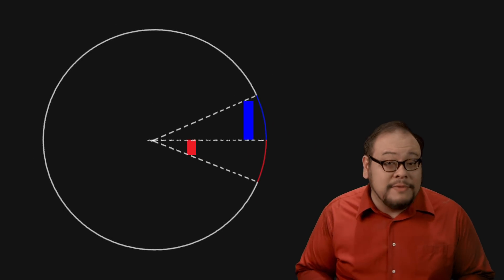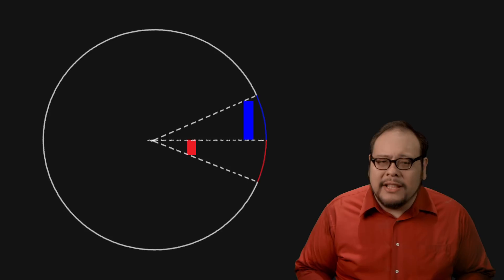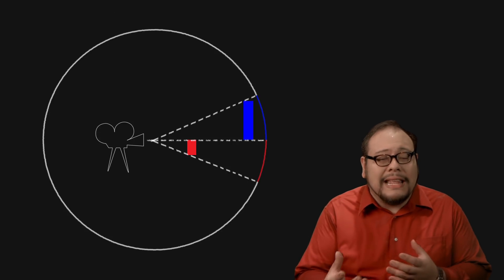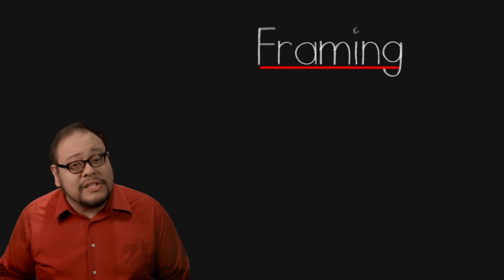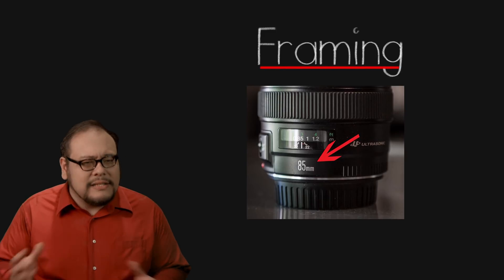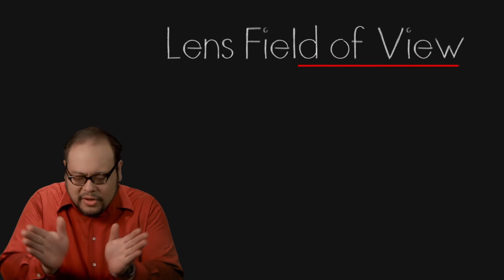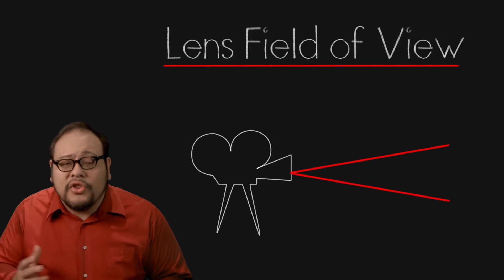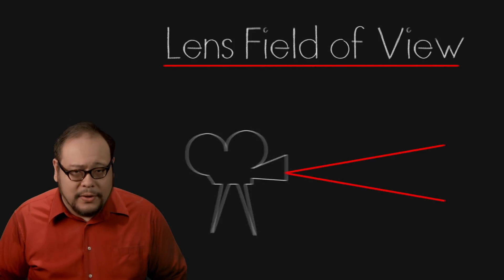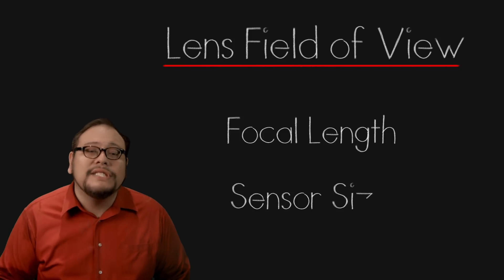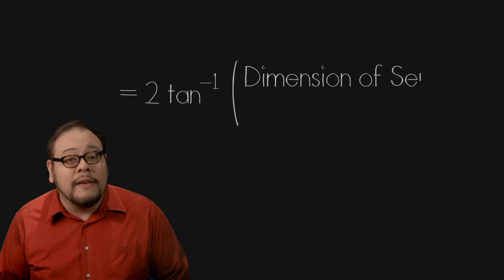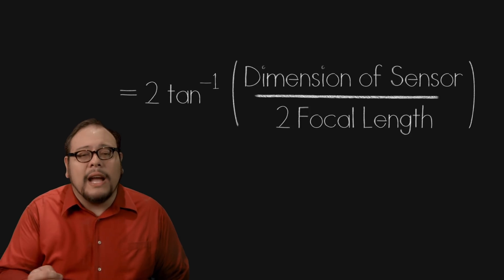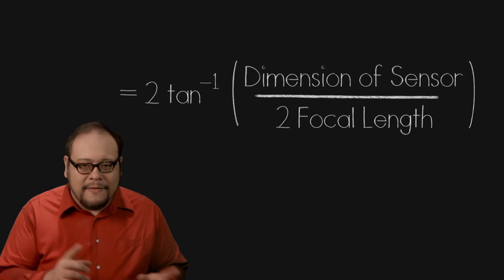So now we can mathematically predict the size relationships between two different objects at specific distances. The next challenge is to capture that relationship with a lens and sensor. The first concern is framing. We generally describe lenses by focal length, but lenses can also be described by the field of view they cover — the total viewing angle. There are two aspects that play into a lens's field of view: focal length and sensor size. The equation for finding the field of view is 2 times the inverse tangent of the sensor dimension along one axis divided by 2 times the focal length. Again this outputs radians, so we have to convert to degrees.